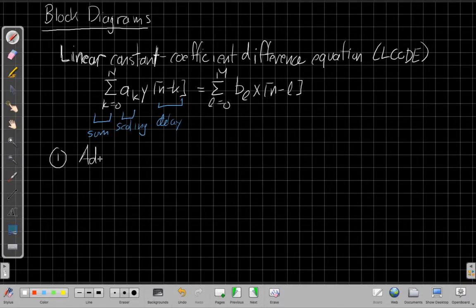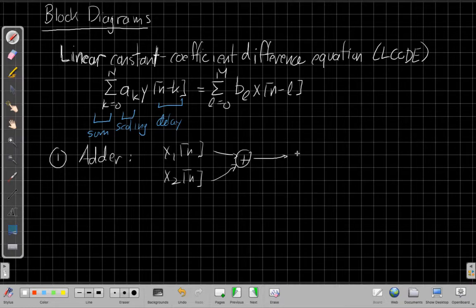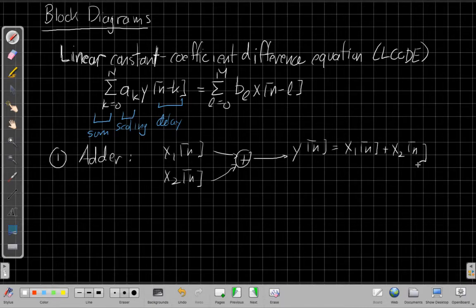And so again, the first thing we'll have to get a sum is we need an adder. We have a system that takes two different inputs, X1 and X2 of N, brings them together into this type of block diagram, and then the output of the adder is the sum of the two outputs.